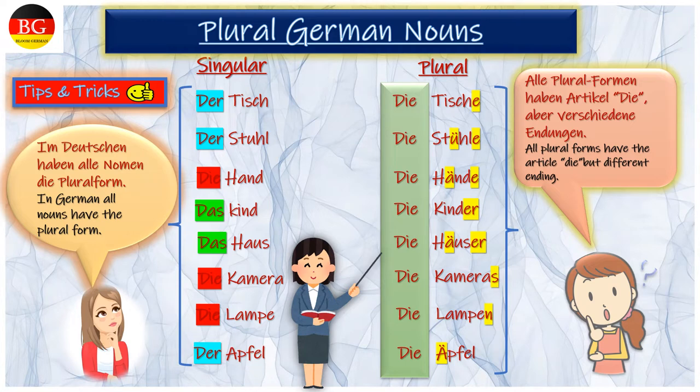In English, there are normally two endings in plural: S or ES.